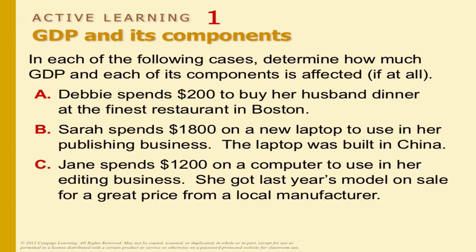Jane spent $1,200 on a computer to use in her editing business. She got last year's model on sale for a great price from a local manufacturer. GDP up or down for this period? Investment goes up this period, and the prior period's investment goes down because the item was sitting in inventory — it comes out of prior investment and into current consumption.